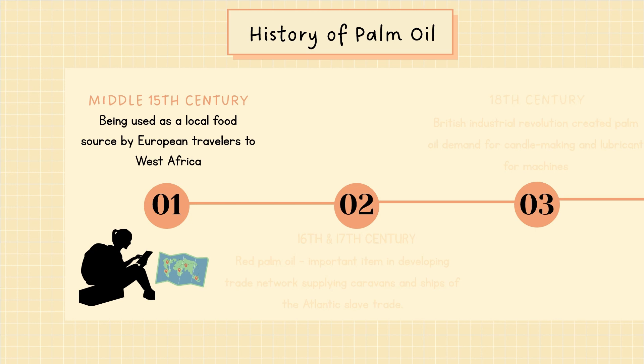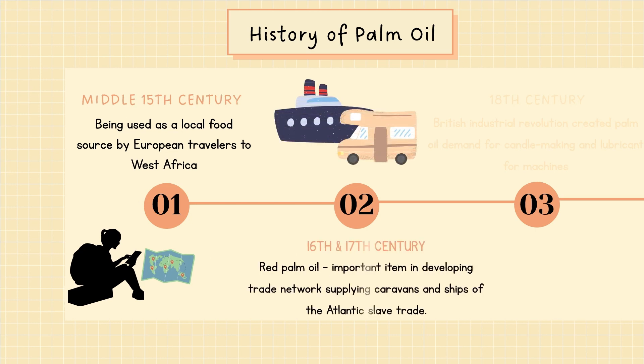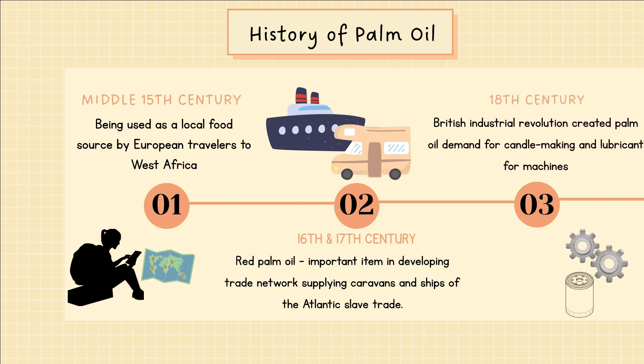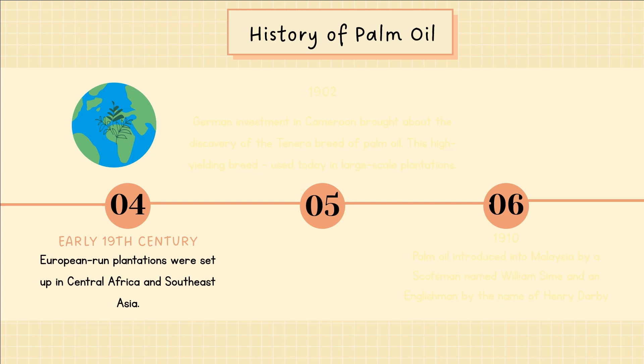In the middle 15th century, palm oil was being used as a local food source by European travelers to West Africa. In the 16th and 17th centuries, red palm oil became an important item in developing trade networks, supplying caravans and ships of the Atlantic slave trade. Later in the 18th century, the British Industrial Revolution created palm oil demand for candle making and lubricant for machines. In the early 19th century, European-run plantations were set up in Central Africa and Southeast Asia.